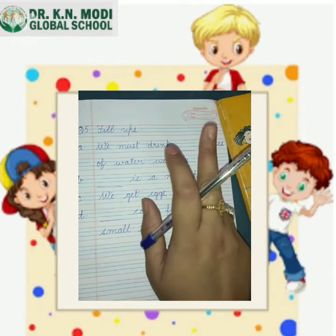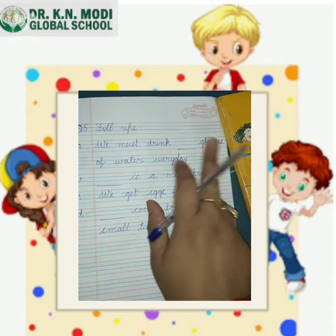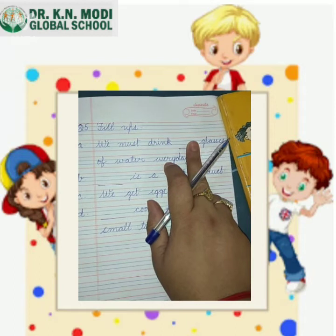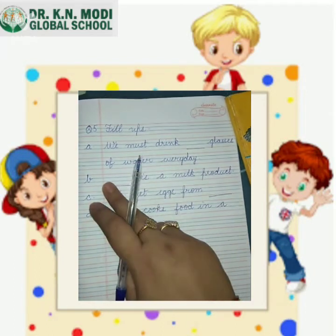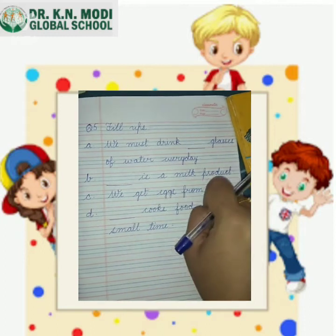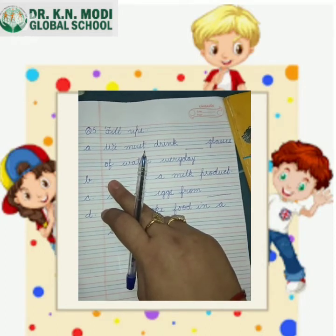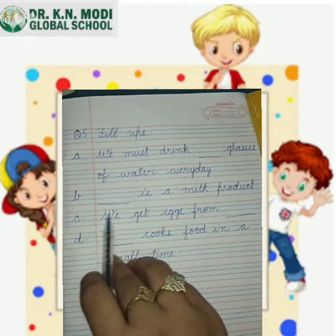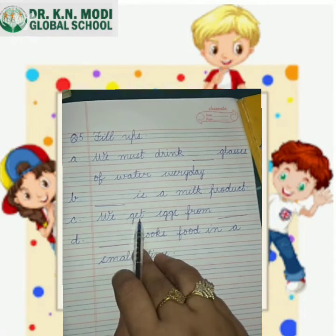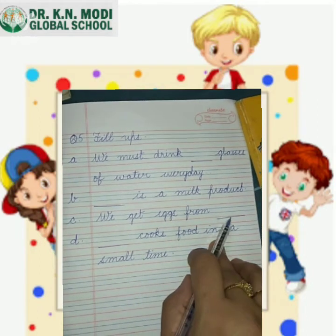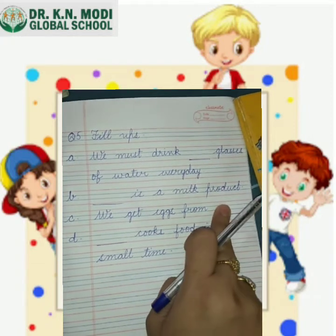Next: dash is a milk product - write down an example of a milk product. Next: we get eggs from dash - you have to write where we get eggs from.